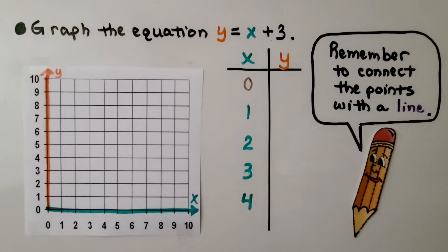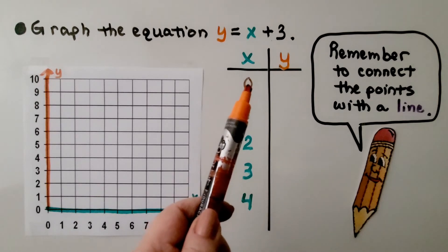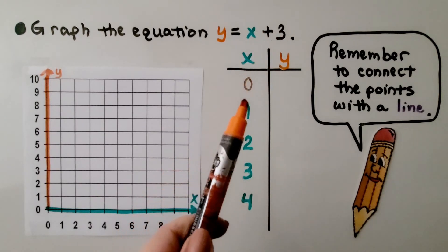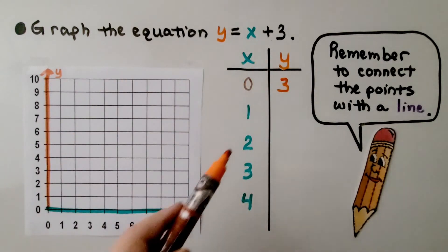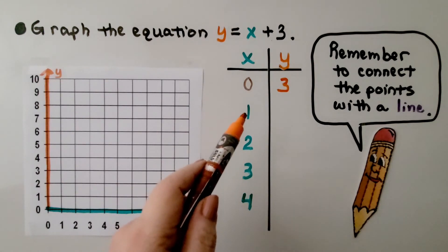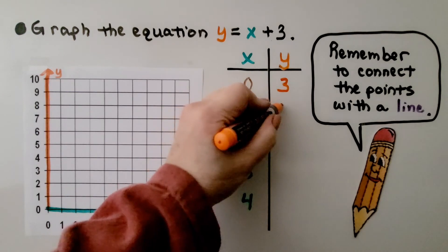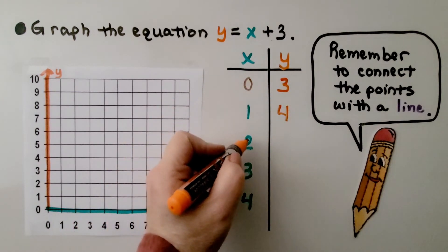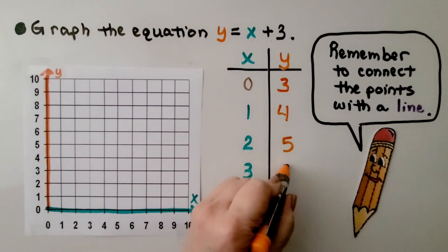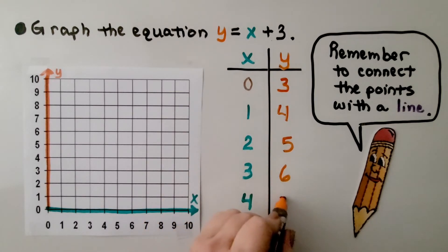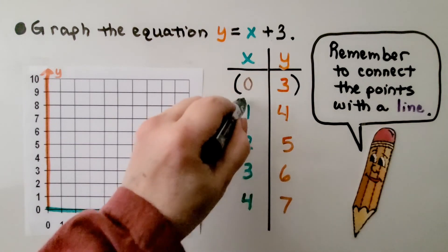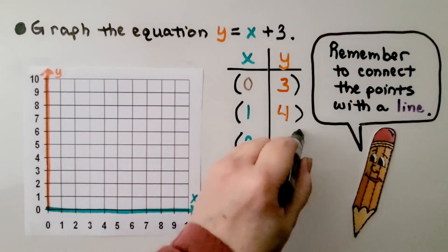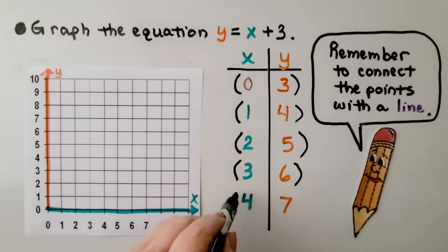Let's try graphing the equation y equals x plus 3. If x is 0, 0 plus 3 is 3, so y equals 3. If x is 1, 1 plus 3 is 4. 2 plus 3 is 5. 3 plus 3 is 6. 4 plus 3 is 7. Now we have our ordered pairs: (0, 3), (1, 4), (2, 5), (3, 6), and (4, 7).